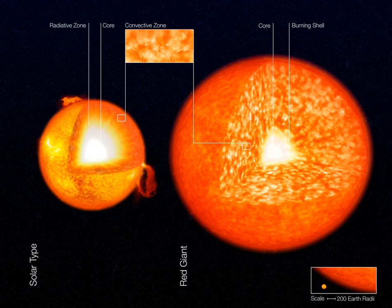However, if the temperature gradient is steep enough — i.e., the temperature changes rapidly with distance from the center of the star — or if the gas has a very high heat capacity — i.e., its temperature changes relatively slowly as it expands — then the rising parcel of gas will remain warmer and less dense than its new surroundings even after expanding and cooling. Its buoyancy will then cause it to continue to rise. The region of the star in which this happens is the convection zone.